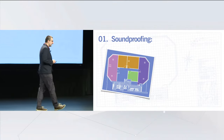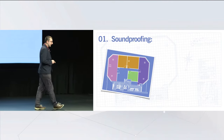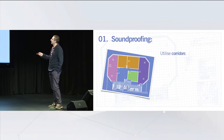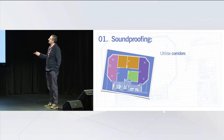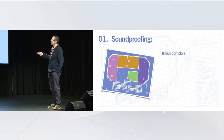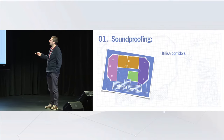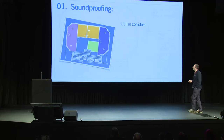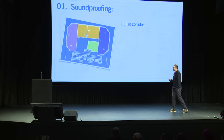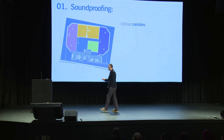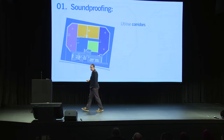Soundproofing is going to be a big challenge and should be top of your list. The best advice we have is to utilise corridors as best you can. This corridor going down the middle isolates the observation rooms from the single-player room. And this wall here is the only wall joining observation and playroom, so it got all of our attention in terms of soundproofing. If you're designing a space, use those corridors to segment sections where you don't want sound to travel.